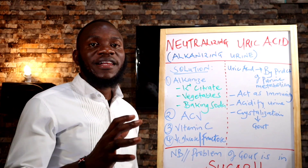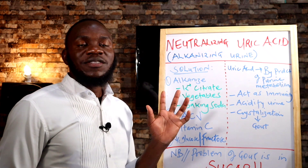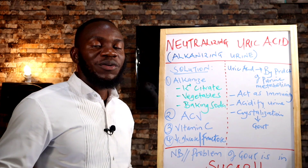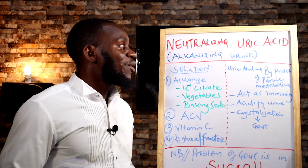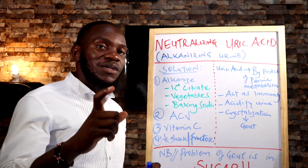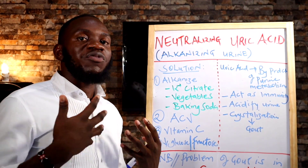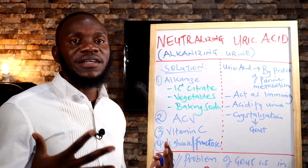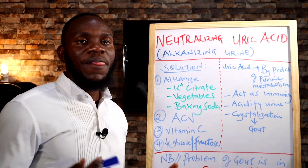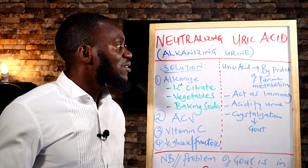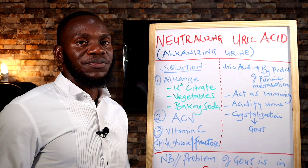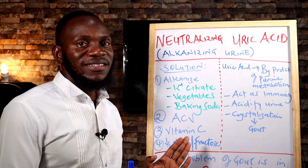Ladies and gentlemen, welcome back to the health and wellness channel. This is basically a review of gout — we've done a video about gout and we'll connect that link below so you can watch it. We also want to learn a new method of clearing uric acid from your system. Gout is a condition involving accumulation of uric acid crystals in your joints, causing pain and inflammation. Normally you'd be told to buy drugs like colchicine for gout.